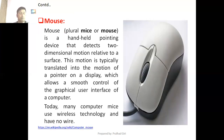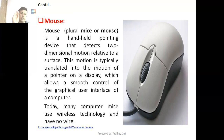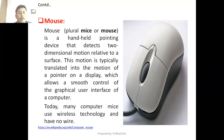The next input device is mouse. Mouse is a handheld pointing device that detects two-dimensional motion relative to a surface. It is a palm-sized pointing device. This motion is typically translated into movement of a cursor on a display, allowing smooth control of the graphical user interface of a computer. Today many computers use wireless technology and have no wire, so there are different types of mouse available in the market.